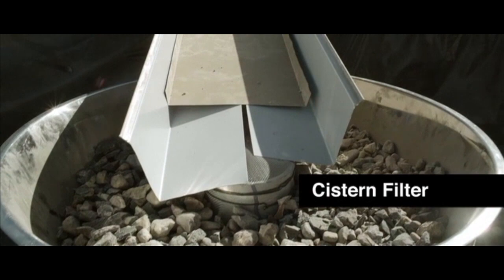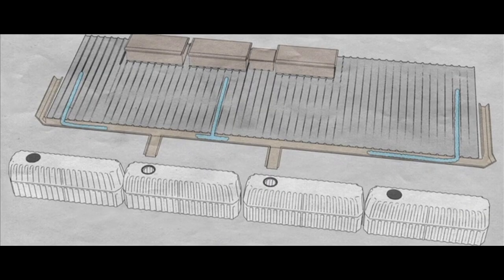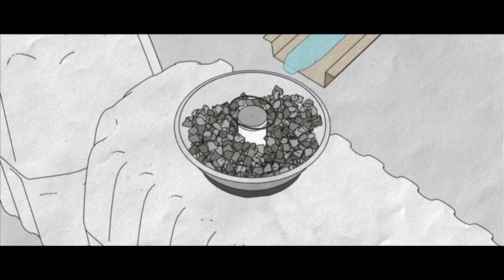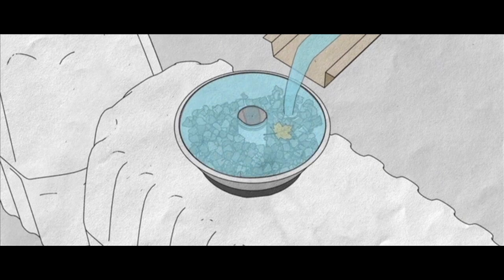Cistern filter. Before any water falls from the gutter into the cistern, you need to filter it with gravel and a silt catcher to keep the unwanted solids out of the cistern.